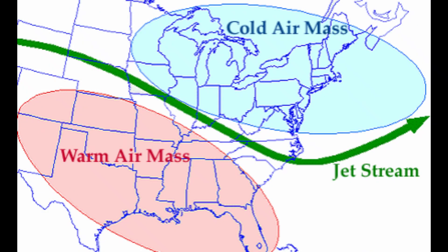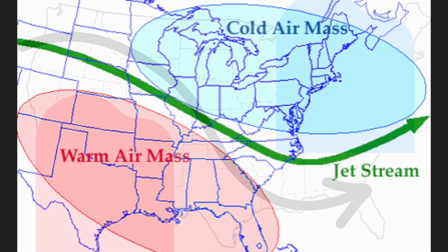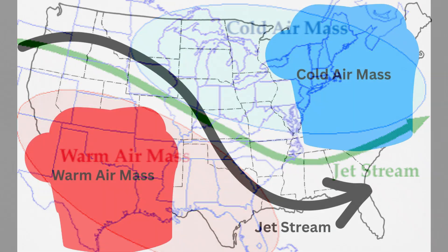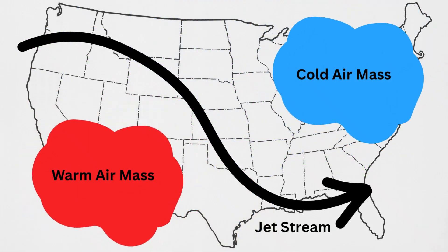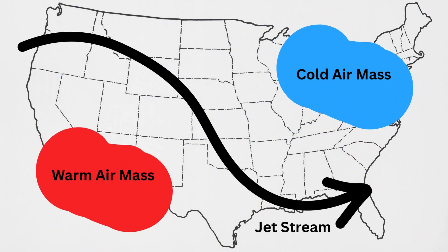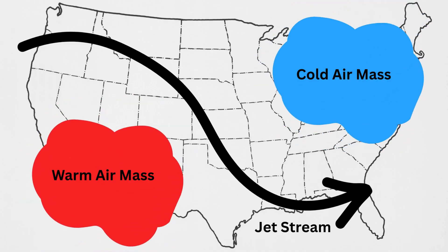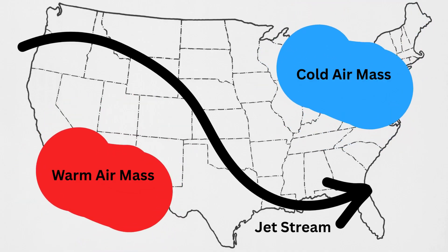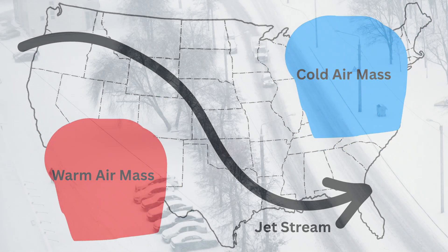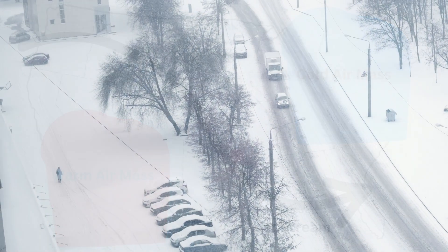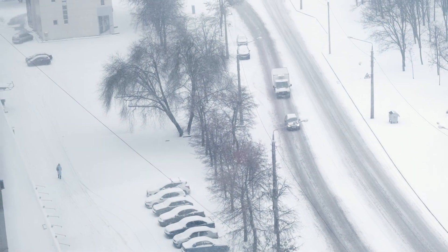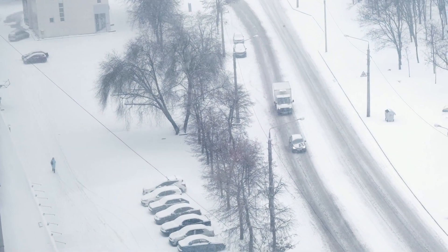Jet streams often form along the boundaries between major air masses. You can think of them as moving borders between warm and cold air. When those borders shift, the jet stream shifts with them, and the weather below can change very quickly.